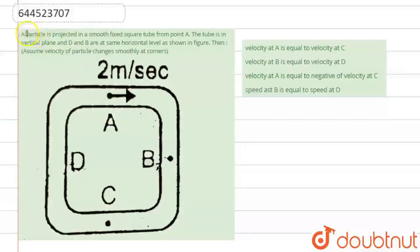Well, hello students. Now we are going to see this question. The question says that a particle is projected on a smooth fixed square tube at point A. The tube is in vertical plane, and D and B are at the same horizontal level.